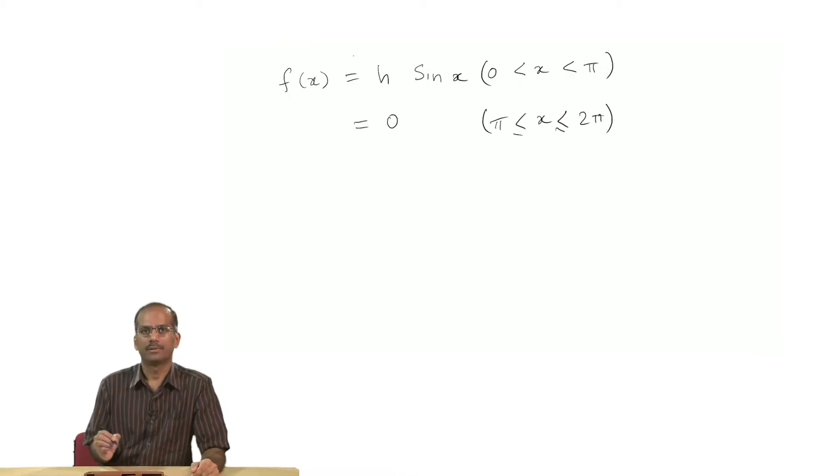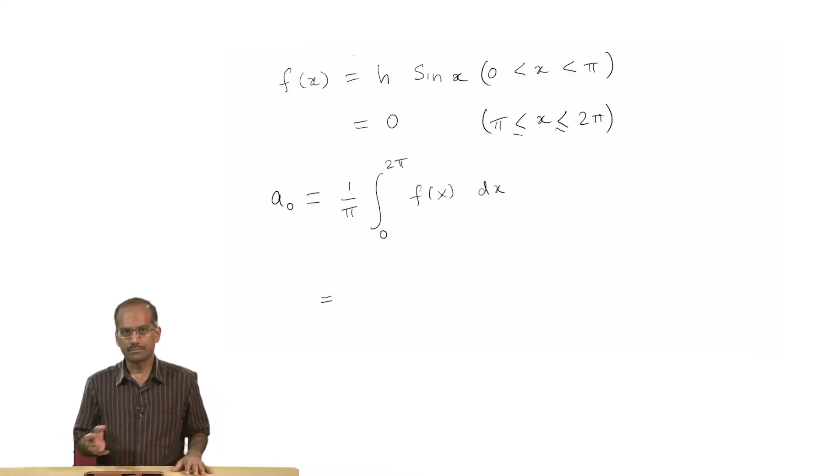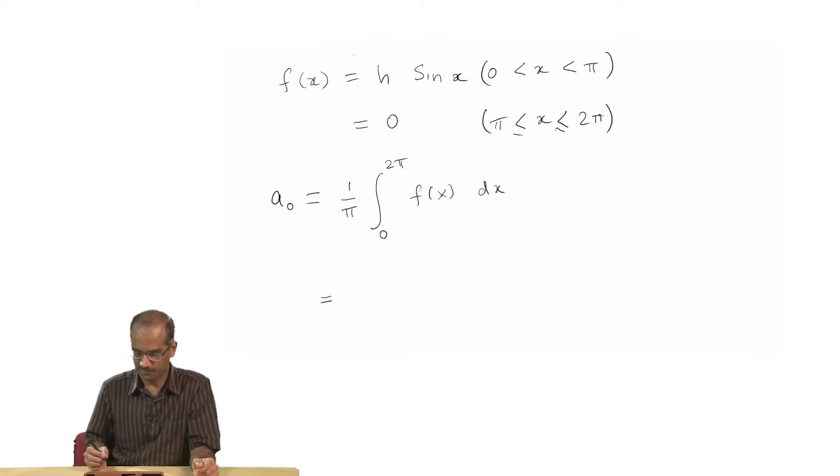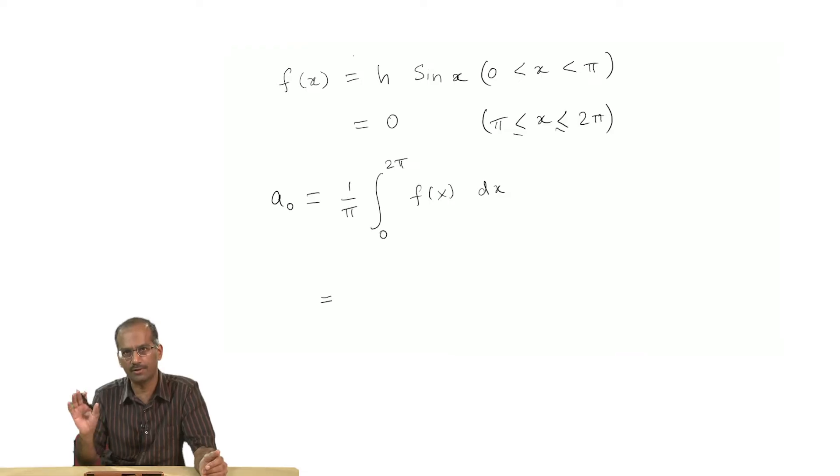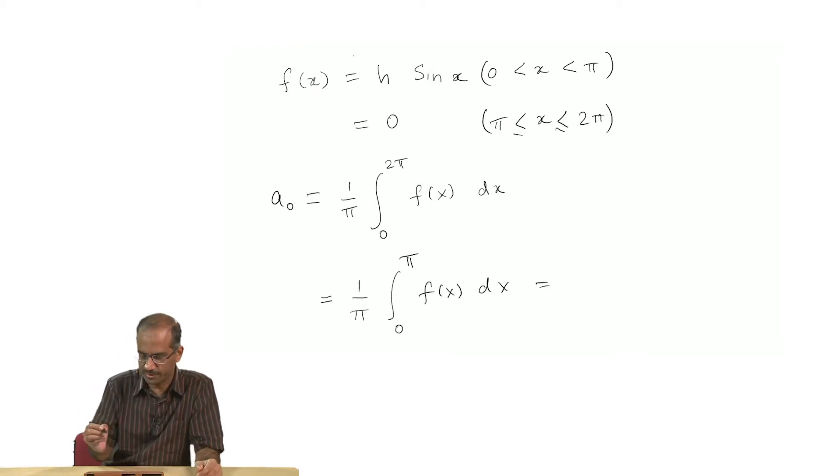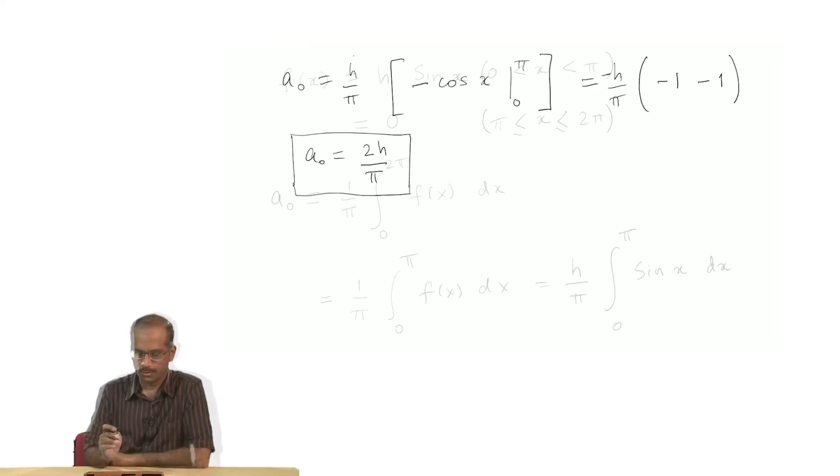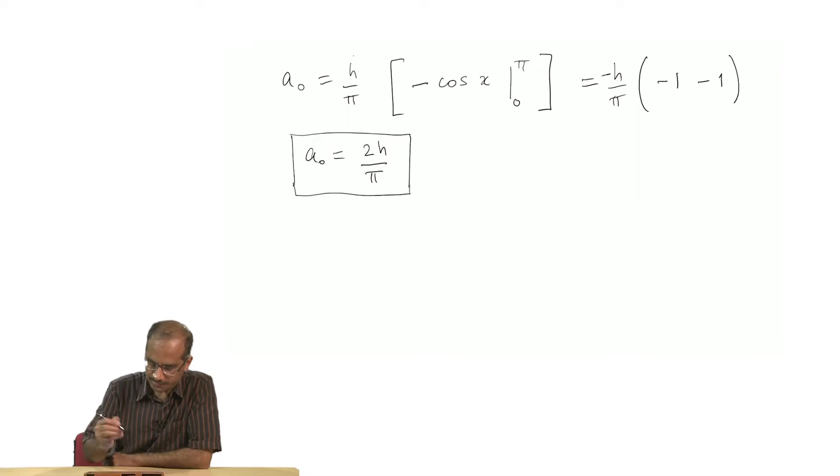Let us first calculate the average value of the function. This is our basic formula for a₀, the mean value of the function. Conveniently, the value of the function between π and 2π is 0. So that would be f of x is h sin x, 0 to π, sin x dx.